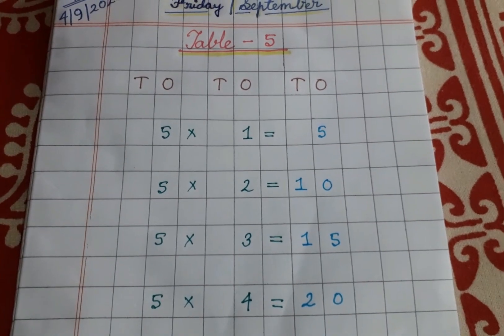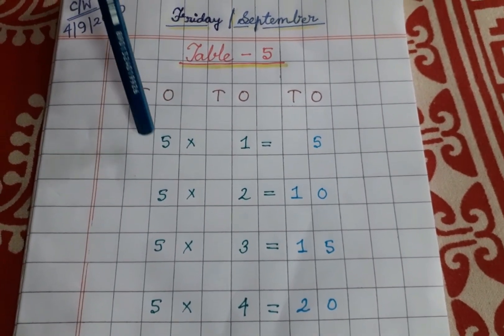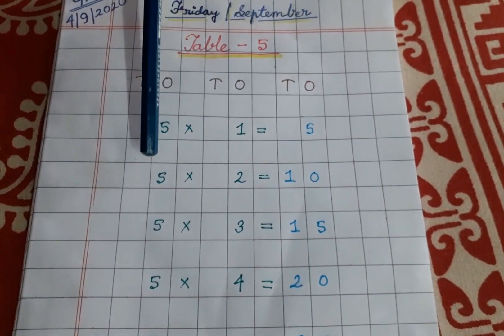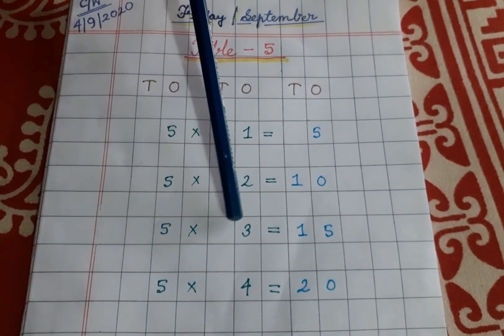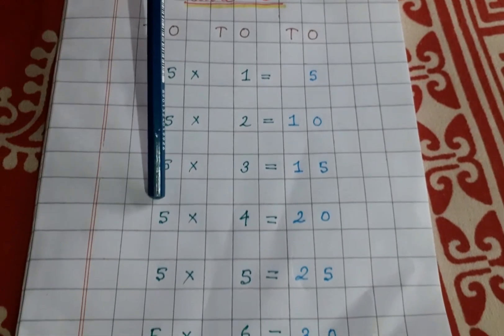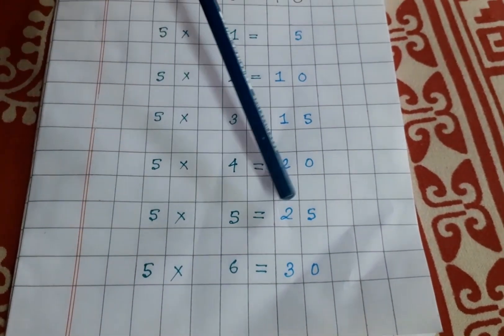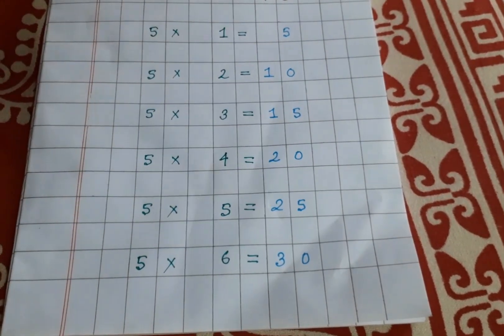So like this you will write. Now read with me kids. 5 ones are 5. 5 twos are 10. 5 threes are 15. 5 fours are 20. 5 fives are 25. 5 sixes are 30.